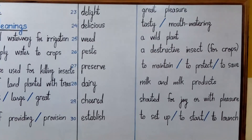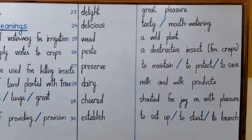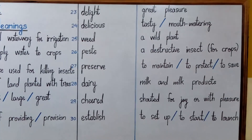Number twenty-nine is 'cheer'. This is the past form of cheer, which means to shout for joy or with pleasure. So 'cheered' means shouted for joy or with pleasure.